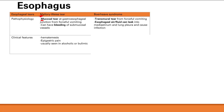Mallory-Weiss is the one with the mucosal tear. The next one is Boerhaave syndrome, and that's the transmural one — meaning the whole esophageal wall gets torn apart, and now you have a hole in your esophagus.